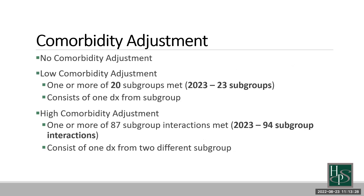Regardless of whether you understand how these comorbidity calculations work, the reality remains: as long as you are coding every diagnosis that the patient has to the greatest specificity possible, what happens with these comorbidities is going to work itself out. You've got to support any coding you do from physician medical record, but the key is to focus on coding every condition the patient has to the greatest specificity possible. This will all work itself out in the secondary diagnosis portion.